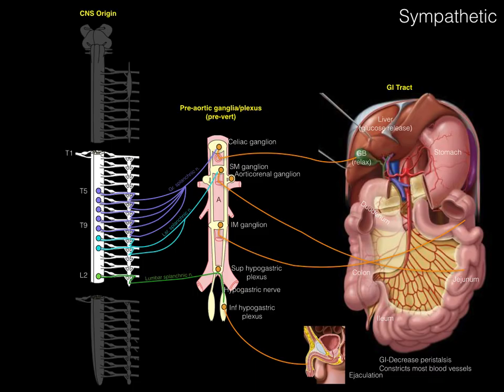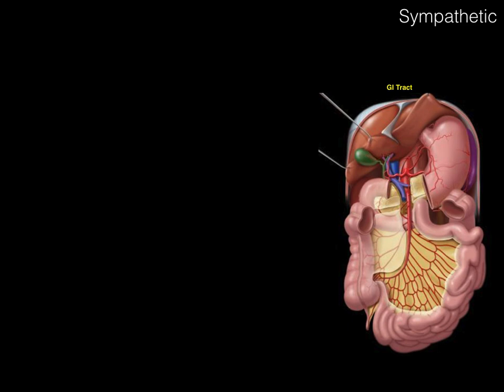This picture is what we're going to build towards — the end result of understanding sympathetic pathways. Starting with the end in mind: sympathetic innervation of abdominal pelvic organs. When sympathetics innervate the liver, it causes the liver to release glucose into the blood. It relaxes the gallbladder. For the stomach, duodenum, jejunum, ileum, and the colon, it decreases peristalsis, but also increases blood flow to that area. For the penis, it causes ejaculation.